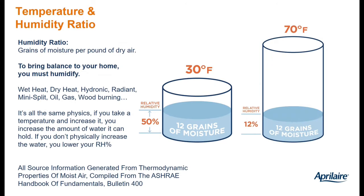Relative humidity incorporates both the amount of humidity in the air — the absolute humidity — as well as the temperature of that air. The temperature of the air affects how much moisture the air can hold. The warmer the air, the more moisture it can hold. The colder the air, the less moisture it can hold. That's what these two cylinders are illustrating.